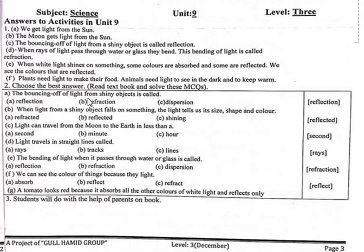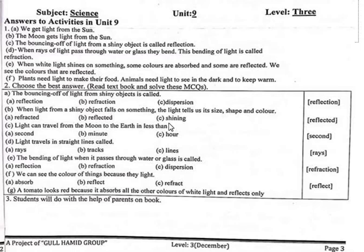MCQ A: The bouncing off of light from a shiny object is called — reflection, refraction, or dispersion? Jab light bounce kerti hai kisi shiny object pe to kya hoti hai light? Reflection. When light from a shiny object falls on something, the light tells us its size, shape, and color. Is procedure ko hum kehtae hain reflected.